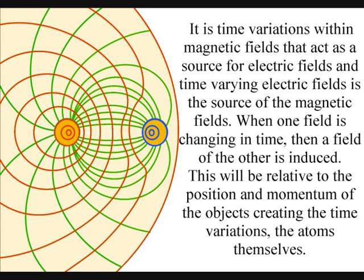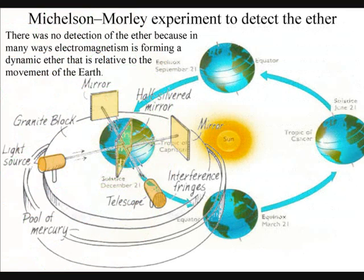In such a theory, it would be easy to think of electromagnetism as a dynamic ether that moves relative to the Earth. Therefore, it would not show up in any experiment that was relative to the movement of the Earth.